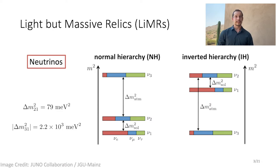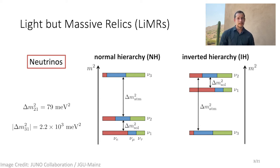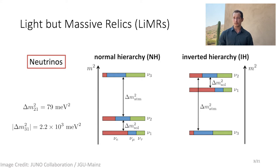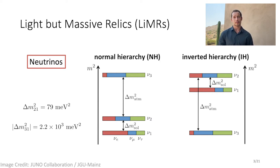A familiar example of a LEMUR is the neutrino, which we know decoupled from the standard model relativistically. From oscillation experiments, we know two of the neutrino mass splittings, but we only know the sign of the splitting for one. This leaves two possible neutrino mass hierarchies: the normal hierarchy and the inverted hierarchy. In the minimal mass scenario, where the lightest neutrino is massless, the remaining two neutrinos will have masses in excess of their temperature today and will be non-relativistic. This is true for both hierarchies, so we know at least two of the three neutrinos are non-relativistic today.